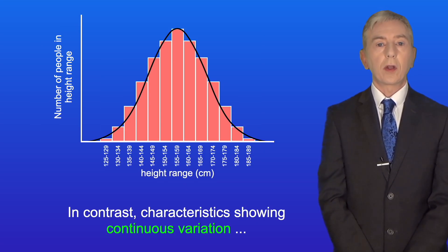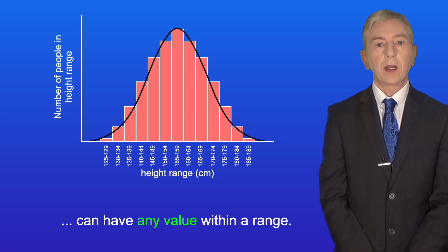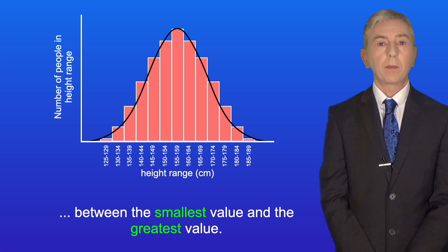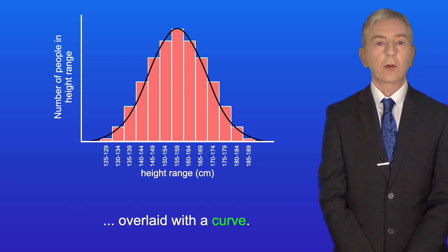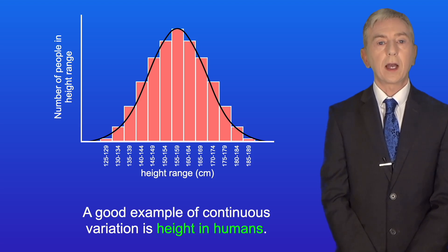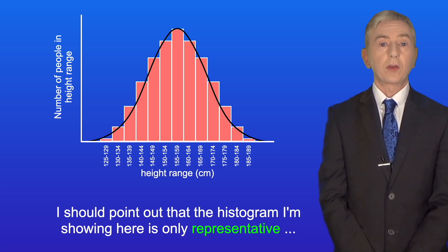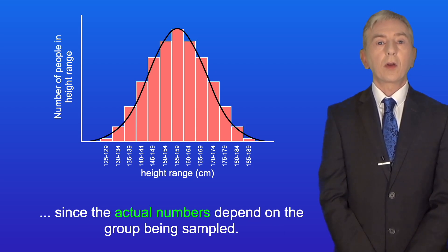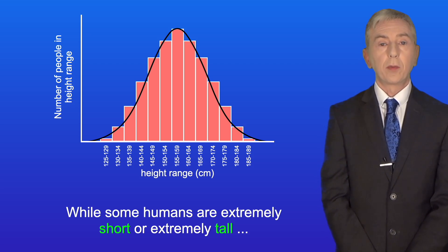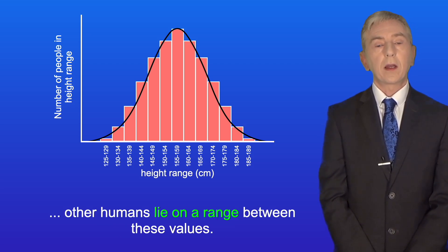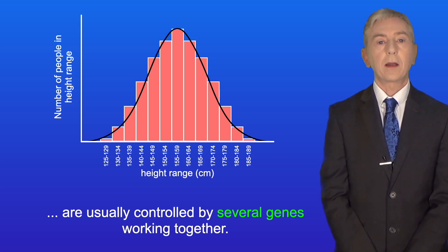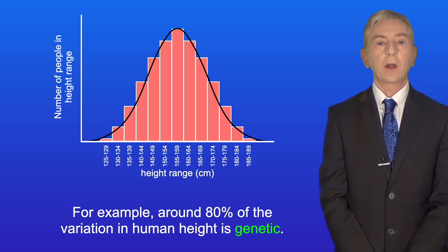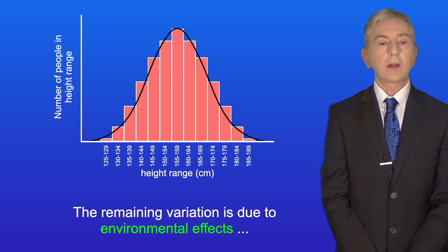In contrast, characteristics showing continuous variation can have any value within a range. Scientists call this a continuum of values between the smallest value and the greatest value. We normally represent continuous variation using a histogram overlaid with a curve. A good example of continuous variation is height in humans. While some humans are extremely short or extremely tall, other humans lie on a range between these values. Features that show continuous variation are usually controlled by several genes working together — scientists call these polygenes. For example, around 80% of the variation in human height is genetic, with the remaining variation due to environmental effects such as diet.